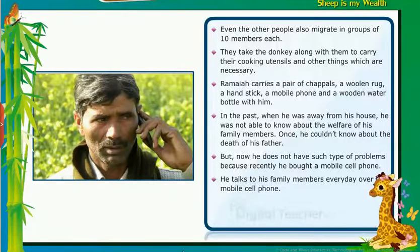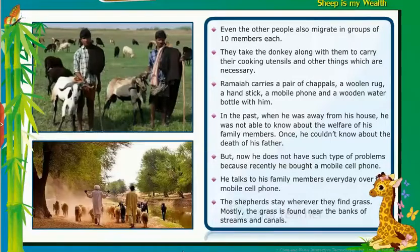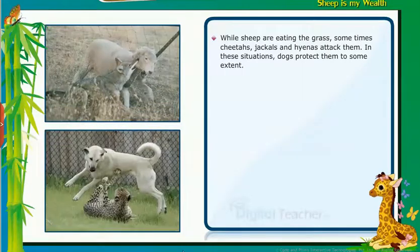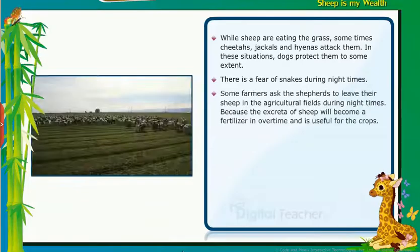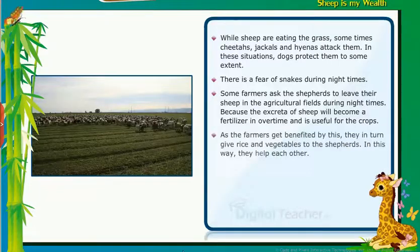The shepherds stay wherever they find grass, mostly near the banks of streams and canals. While sheep are eating grass, sometimes cheetahs, jackals and hyenas attack them; dogs protect them to some extent. There is a fear of snakes during night times. Some farmers ask the shepherds to leave their sheep in agricultural fields at night because the sheep's excreta become fertilizer for crops. The farmers give rice and vegetables to the shepherds in return — in this way, they help each other.